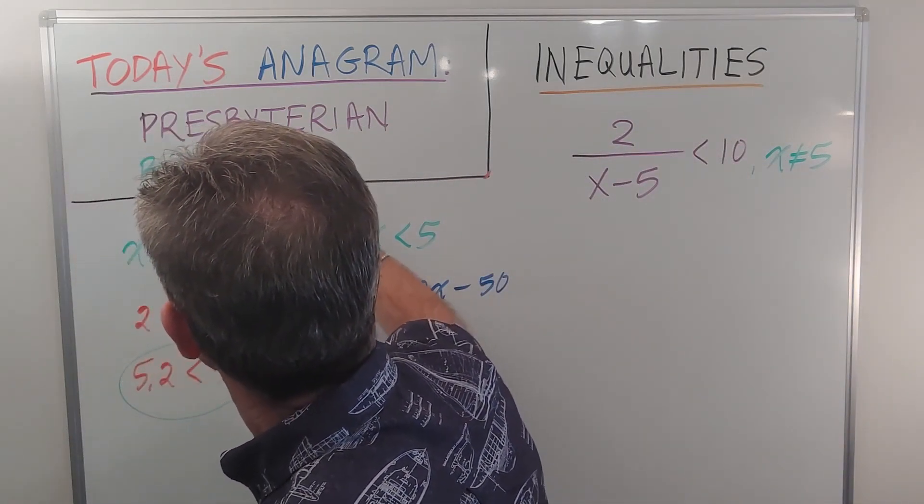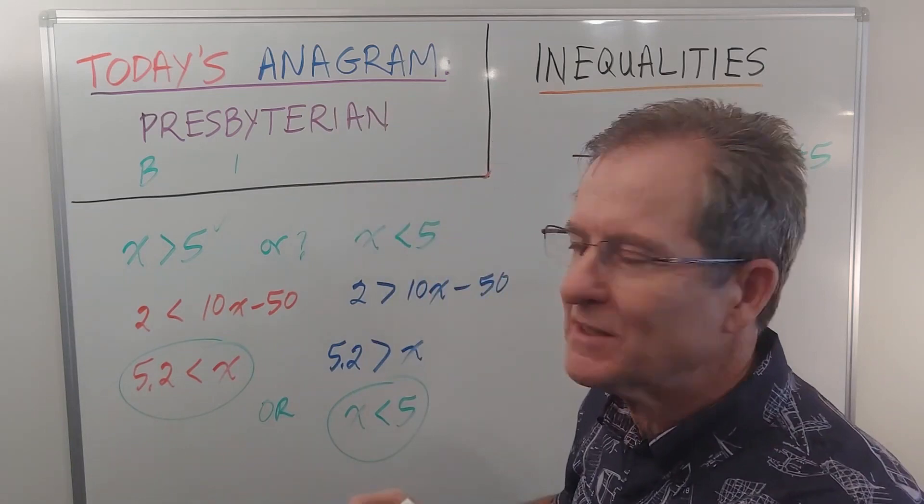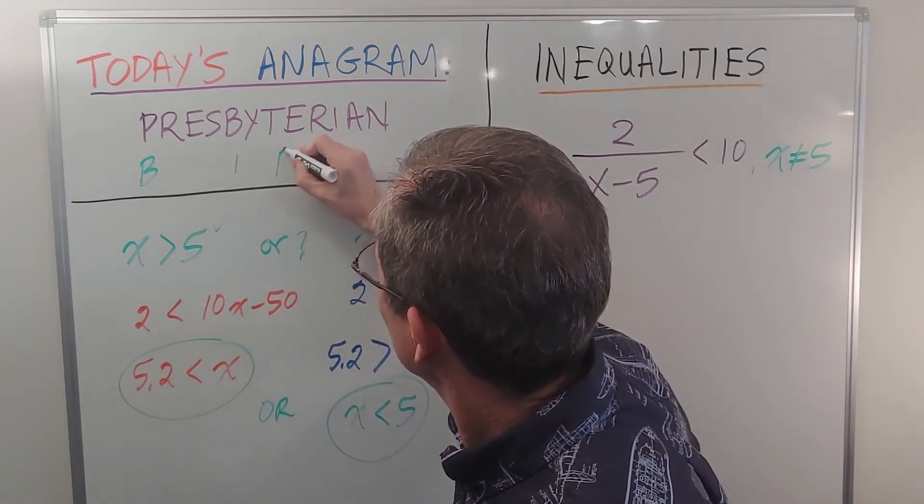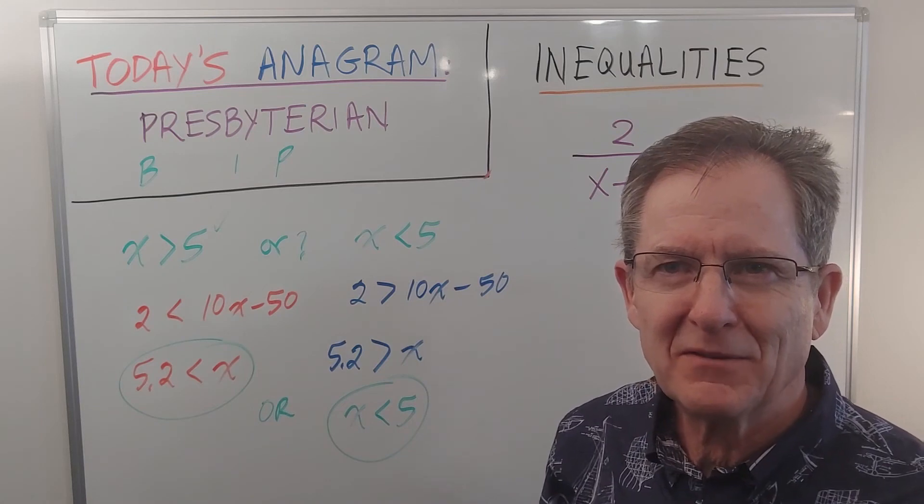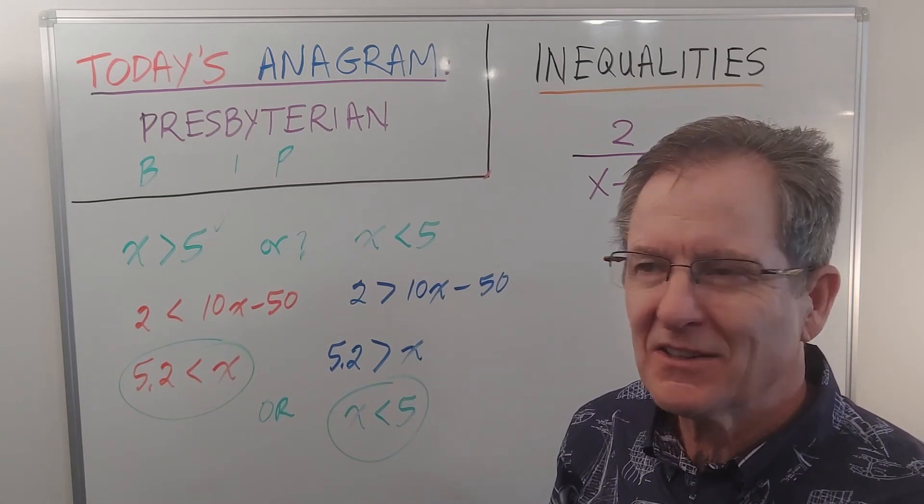First word starts with B. Second word starts with I. And the third word starts with P. If you want to pause the video and think about it for a bit, go right ahead. But I'll give the answer.